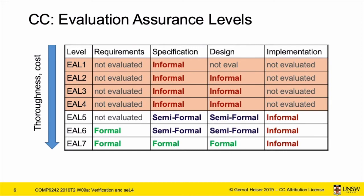EAL5 is where it starts getting serious: they require semi-formal specification and design, meaning some formal language — not pure mathematics, but more precise than English. The implementation is now actually looked at, but still informally. At EAL6, there's a formal requirement for formally specifying the security requirements in unambiguous mathematical language, but everything below is still informal. Only at EAL7 do we have formalization of the specification as well as design, but the implementation is still informal — meaning you have a mathematical model at the design level and then need to argue that the code corresponds to that formal model.